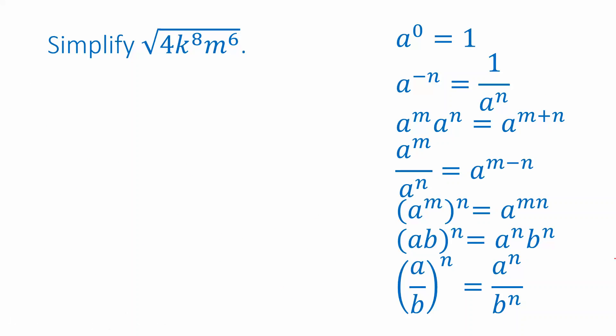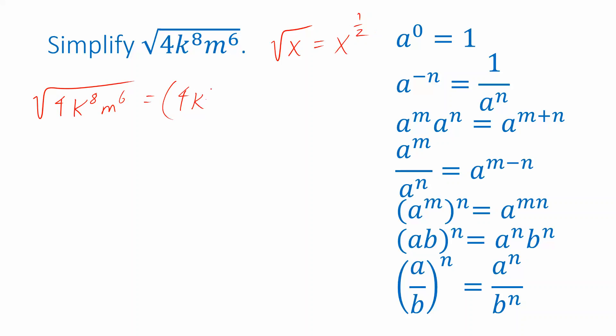One more. We're going to simplify the expression: square root of 4k to the eighth m to the sixth. This looks a little different because of the square root, but remember that a square root can also be expressed as an exponent — specifically, a one-half power. So the square root of 4k to the eighth m to the sixth can be thought of as 4k to the eighth m to the sixth, raised to a one-half power.